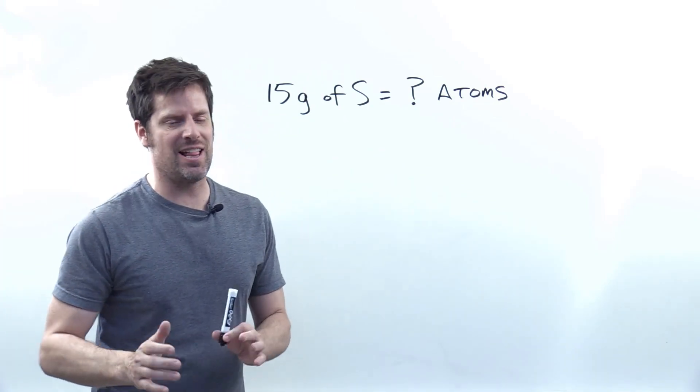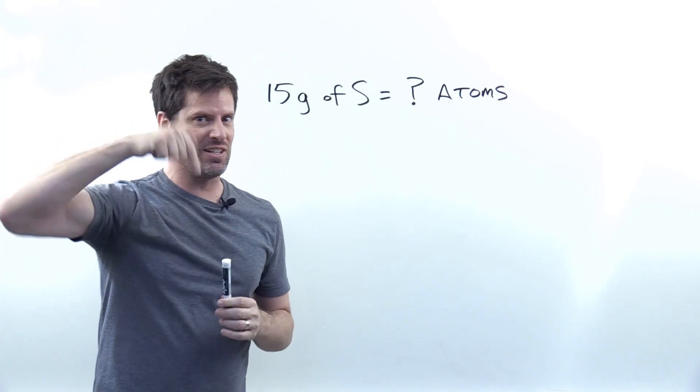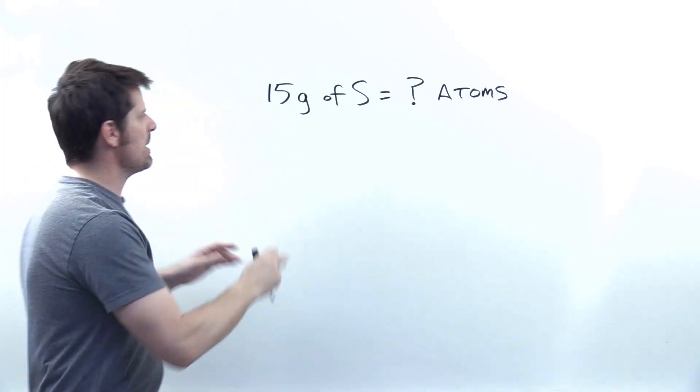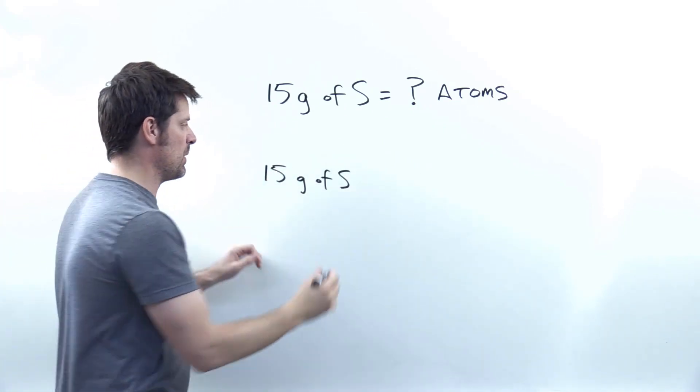We'll answer this by using dimensional analysis slash unit conversion principles that I've taught in previous videos linked to in the description below. We begin by just taking our 15 grams of sulfur, writing it down, and then multiplying it by various sets of parentheses.